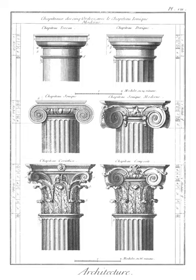Diazoma: a horizontal aisle in an ancient Greek theatre that separates the lower and upper tiers of semicircular seating and intersects with the vertical aisles.